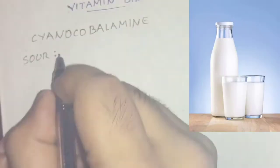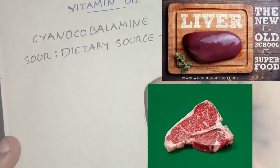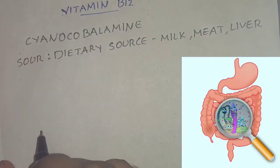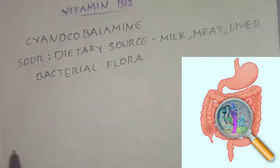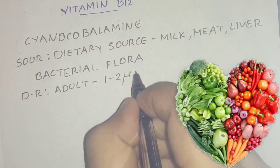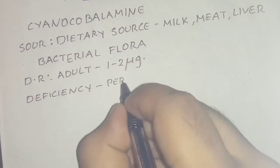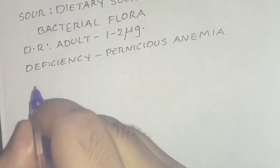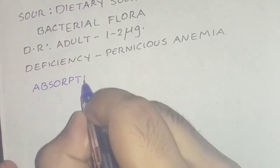Bacterial flora of the large intestine also synthesize vitamin B12. The daily requirement for an adult is 1 to 2 micrograms, and deficiency of B12 leads to pernicious anemia.